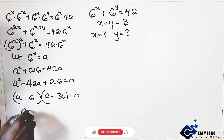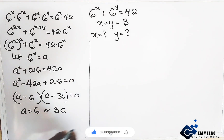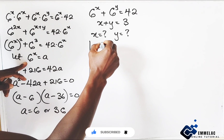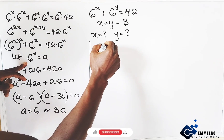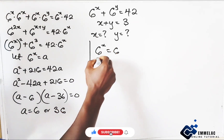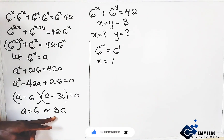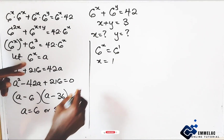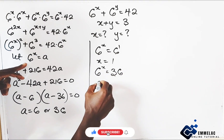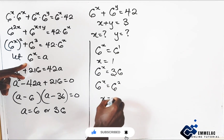So we have that a equals 6 or a equals 36. Since a equals 6 to the power of x: when 6 to the power of x equals 6, then x equals 1. And when 6 to the power of x equals 36, which is 6 to the power of 2, then x equals 2.